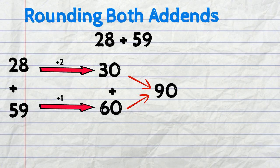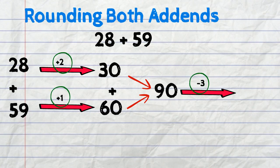Now for the last bit, since we added a 2 to 28 to round it and a 1 to 59 to round it to 60, we have added 3. Now we're going to take away that 3 from number 90. So 90 take away 3 equals 87 and that's our final answer.